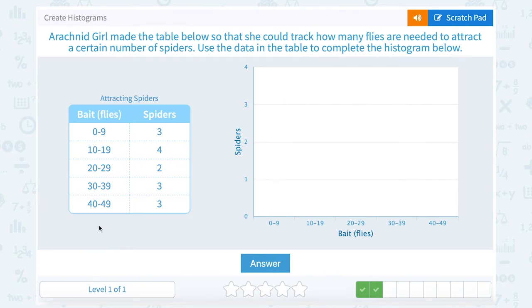Arachnid girl made the table below so that she could track how many flies are needed to attract a certain number of spiders. Use the data in the table to complete the histogram below. Okay, well we can see for zero to nine bait flies she caught three spiders. Okay, so we're going to put our first bar up to three.